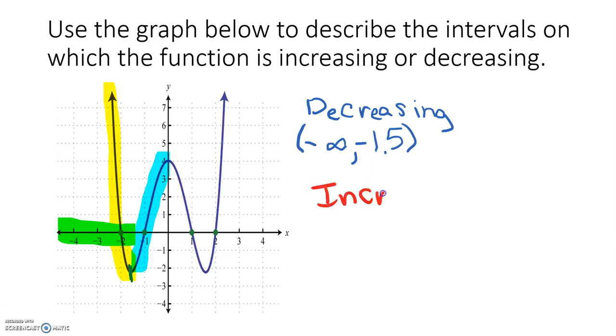So it was increasing from the point x equals negative 1.5 to x equals 0. At that point, again, I am decreasing. It decreases from 0 to this x value, which is at 1.5. So from 0 to 1.5, I'm decreasing again.